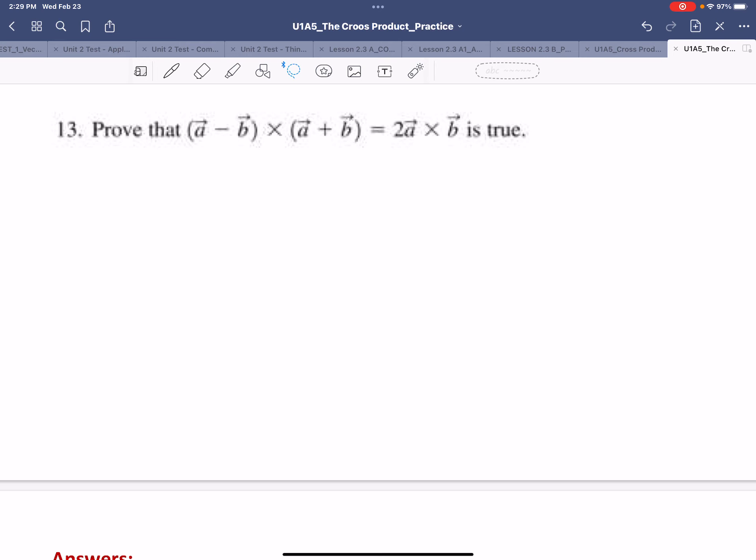So we're trying to prove that given two vectors A and B, the following expression is true. We have A minus B crossing A plus B equals 2A cross B.